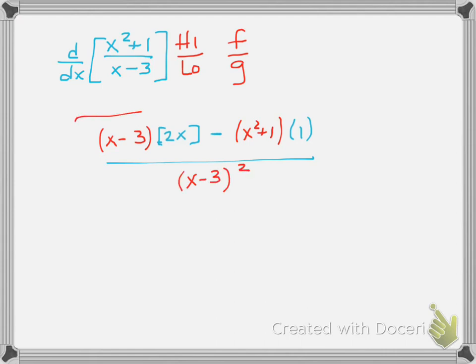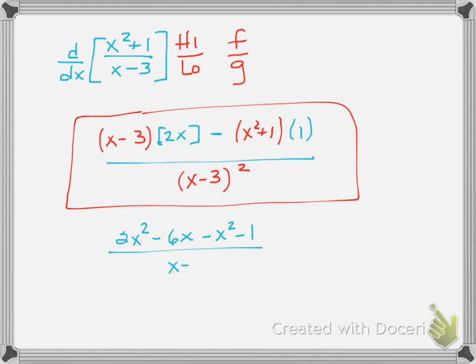Now, in cases like this, you could simplify just a little bit, and so we're going to do that here. You could actually distribute and make it 2x squared minus 6x minus x squared minus 1, all over the bottom. You don't really need to expand the bottom. It doesn't really do much for you. And so you could also say, if we combine like terms of top, that this is your final answer as well.